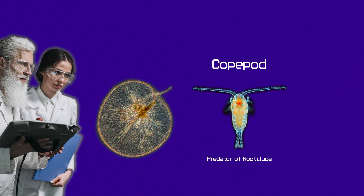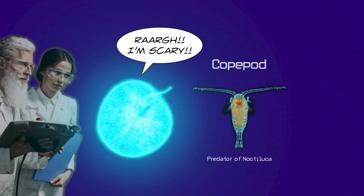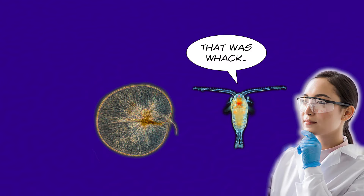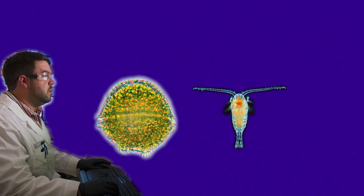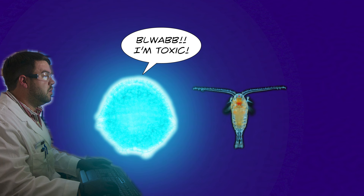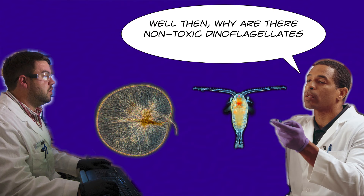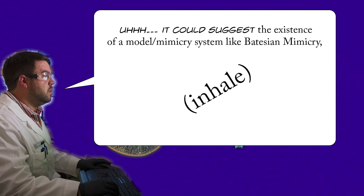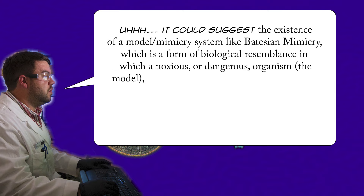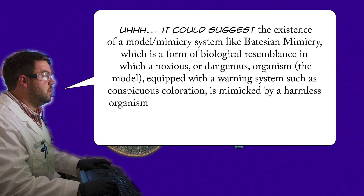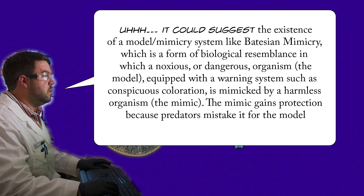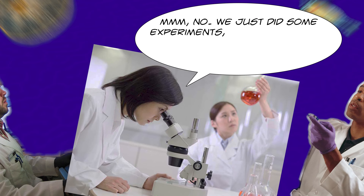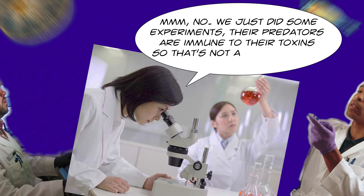Some researchers believe that the reason dinoflagellates are bioluminescent is because the flash of light scares off potential predators. However, this wasn't an entirely satisfying answer, as others pointed out that in theory predators would eventually get used to the flashing light. Some researchers thought it was a warning sign of being poisonous, as a lot of dinoflagellates that are bioluminescent are also very toxic, but then other scientists noted — well, why are there non-toxic dinoflagellates that are bioluminescent? It could suggest the existence of a Batesian mimicry system, where a harmless organism mimics a dangerous one and gains protection because predators mistake it for the model. But we just did some experiments — their predators are immune to their toxins, so that's not a solid reason.